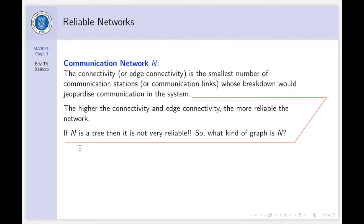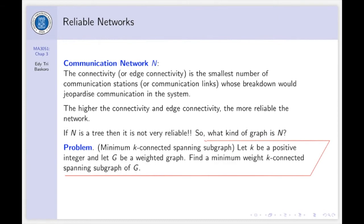If N is a tree, the communication network is a tree, then it's not very reliable. Because if one edge is broken, then it will jeopardize the communication in that system. Or if one vertex is broken, then again the communication will be disconnected. So, what kind of graph is N, which is better than a tree?